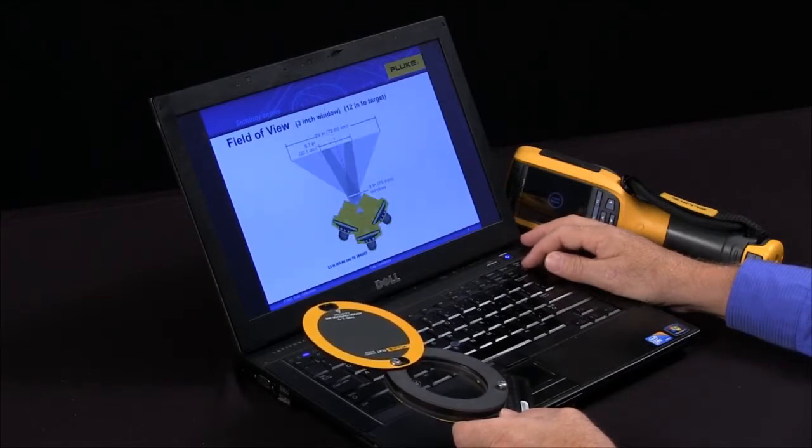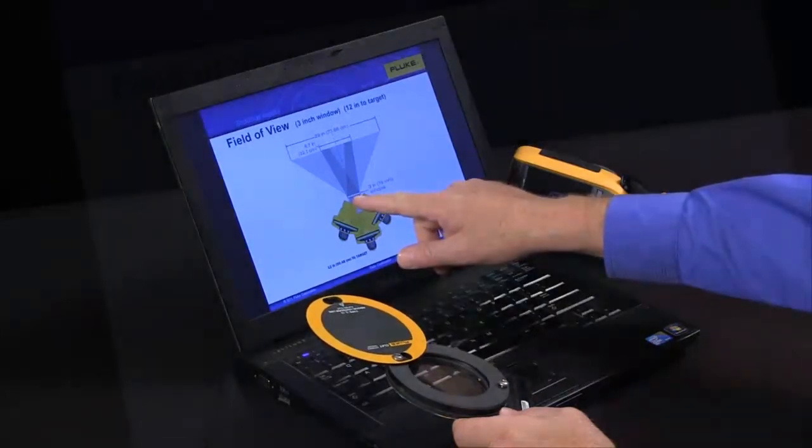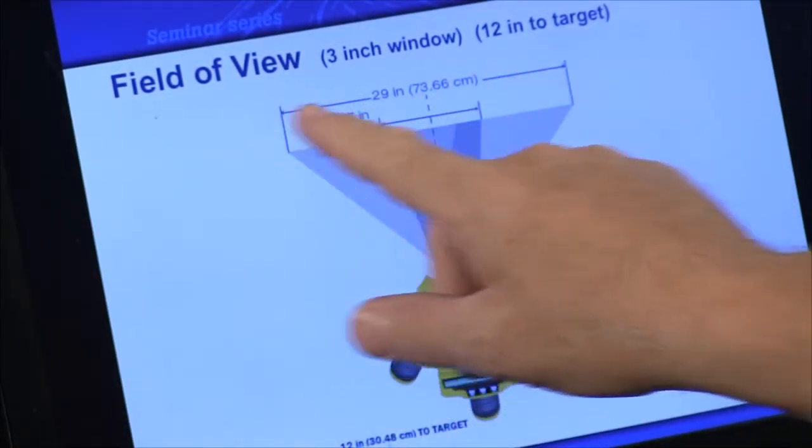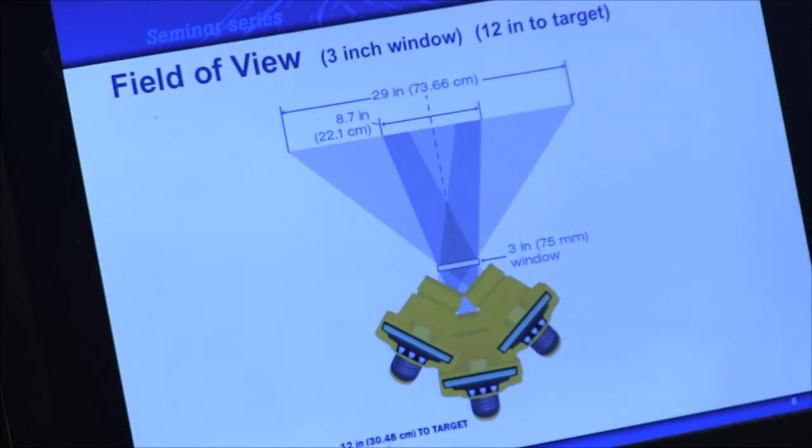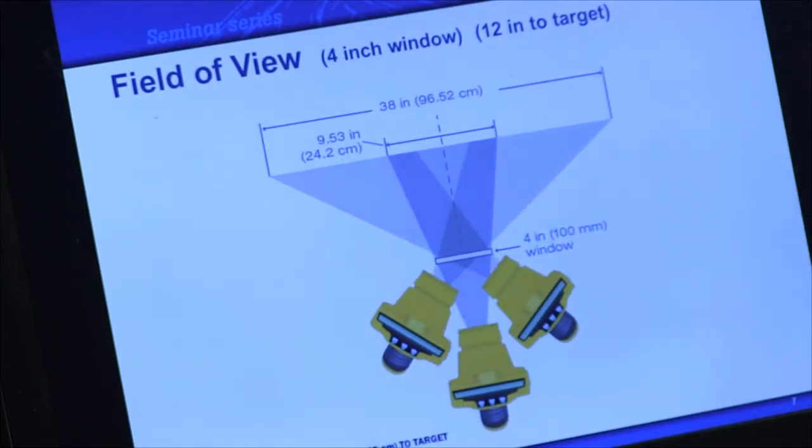This is an example of the field of view. How even though it's only a three inch window with 12 inches to the target, we can get 29 inches across so we can see a pretty wide view.